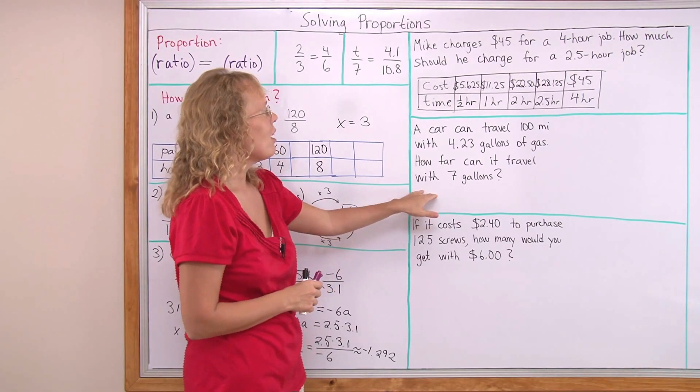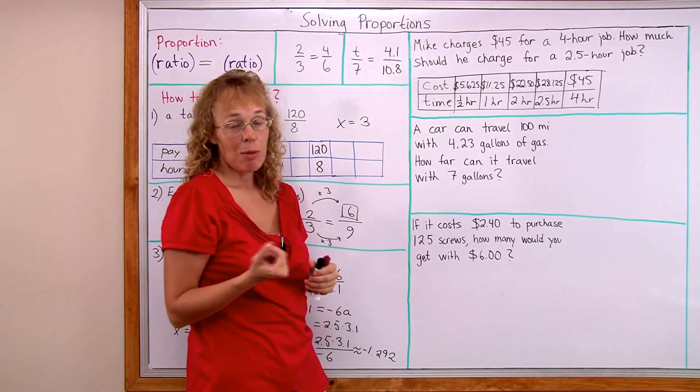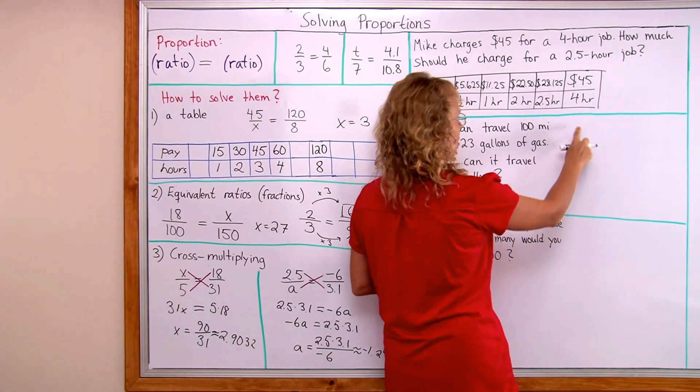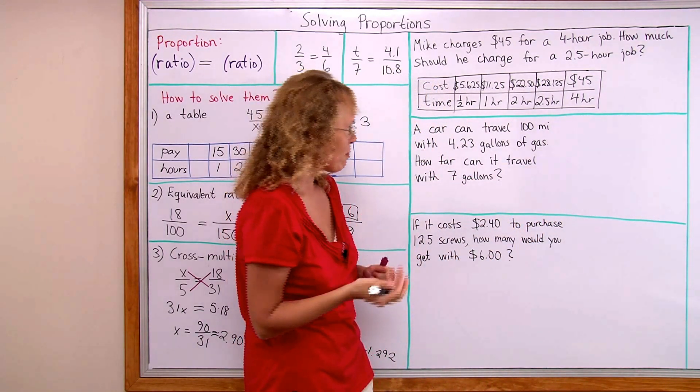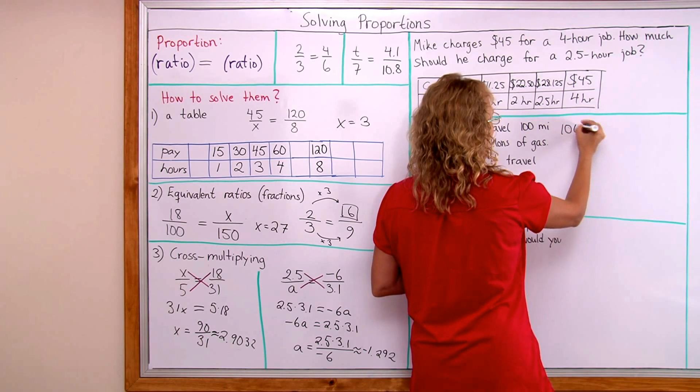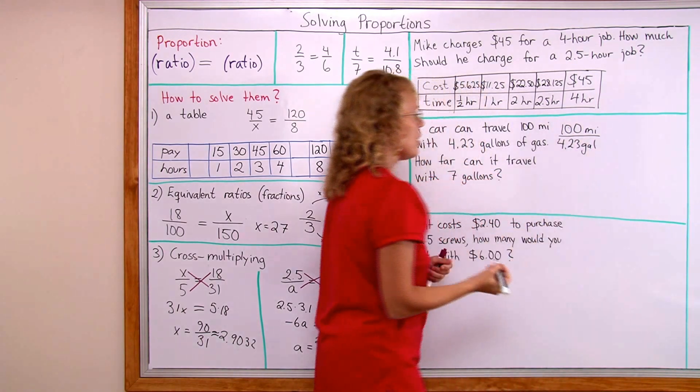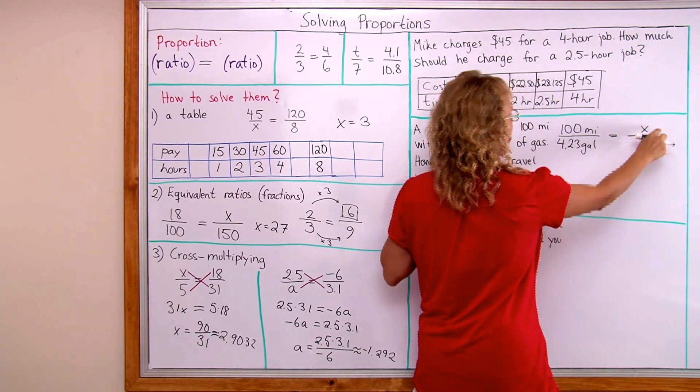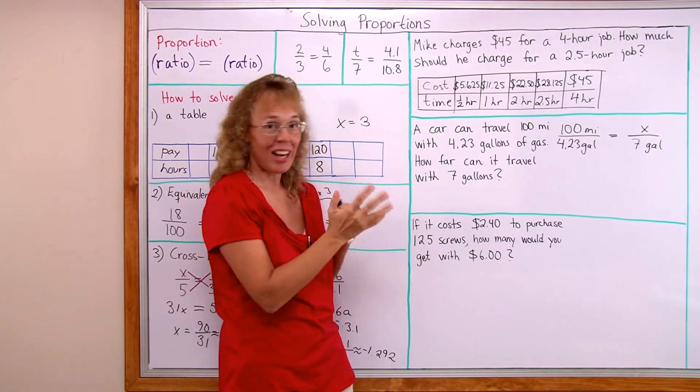A car can travel hundred miles with four point two three gallons of gas. So how far can it travel with seven gallons? This time I'm gonna write a proportion like here. And so I put my first ratio here. Something over something. I can put either the miles over gallons or gallons over miles. That actually does not matter. But usually people talk about miles per gallon so I'll put miles on top. A hundred miles per four point two three gallons. And then in the other ratio we have the unknown. We just know the gallons but we don't know the miles. So this can be unknown amount of miles to seven gallons. Okay?